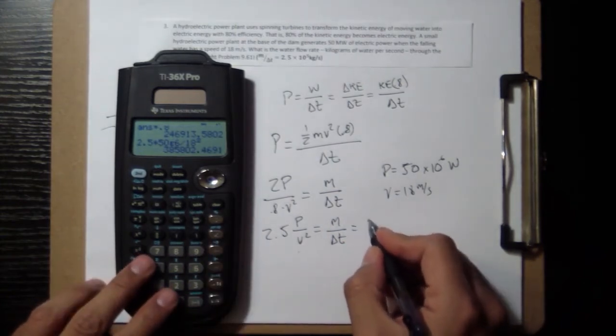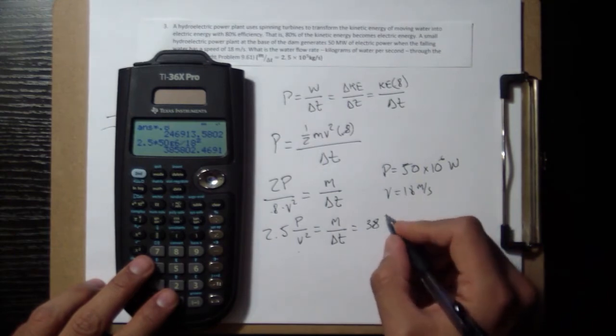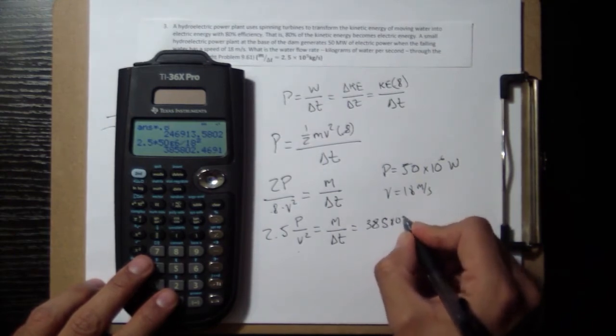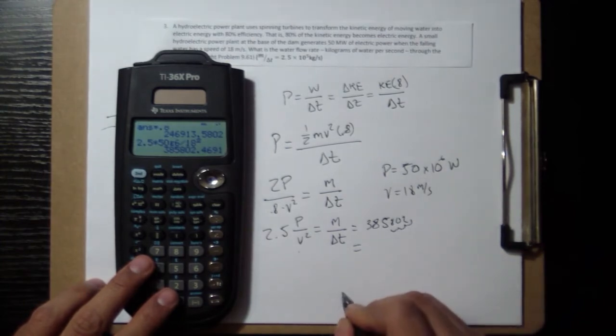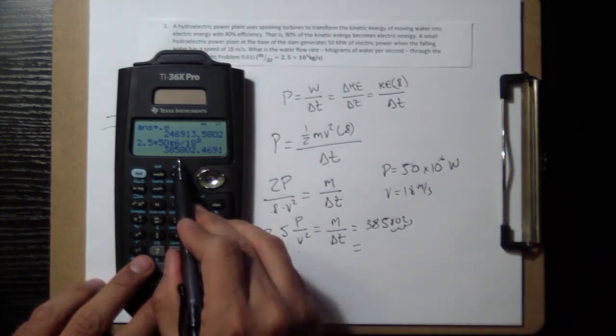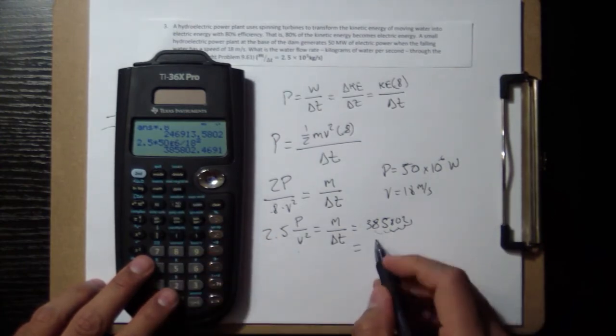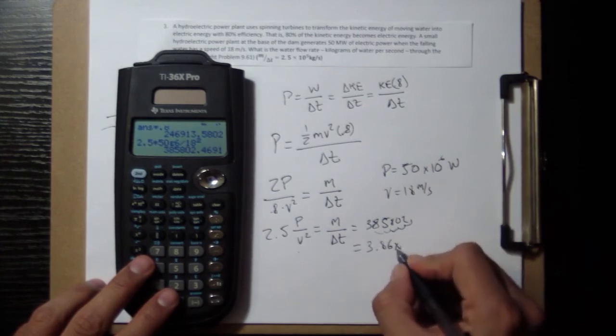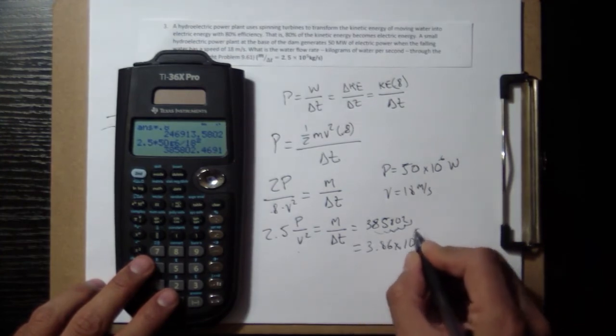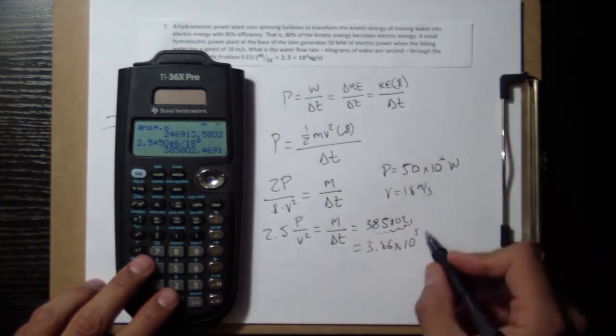We'll have 2.5 times 50 e to the 6 and divide by 18 squared. So we get 3.86 times 10 to the 5, since we moved 5 decimal places. And that's going to be in kilograms per second.